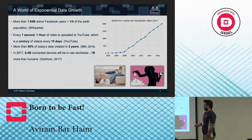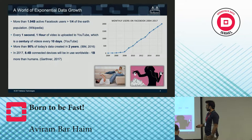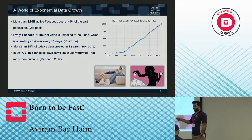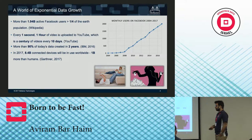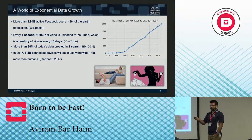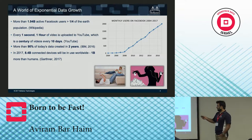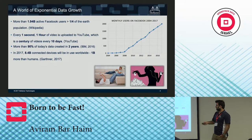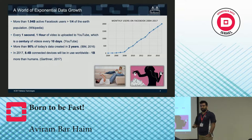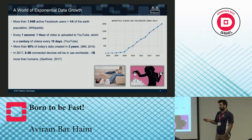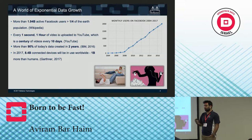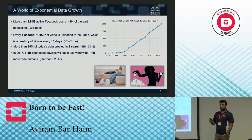We will start with a few numbers. Today we have around 2 billion users on Facebook, which is one out of four persons on Earth. Every one second, one hour of video is being uploaded to YouTube — that's a century of videos every 10 days. More than 90% of the data ever created was created in the last two years. According to Gartner, this year we're going to have more than 8 billion connected devices to the internet, which is 1 billion more than human beings.